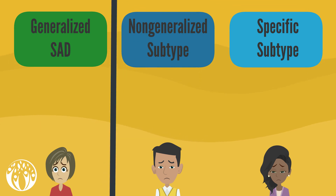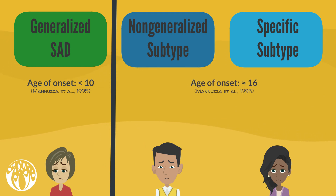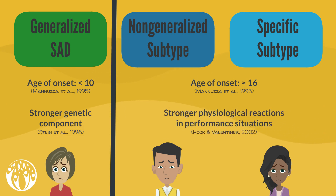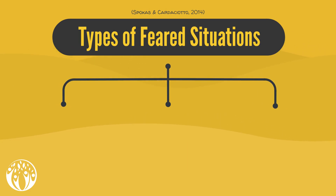Generalized SAD also seems to differ from the other two subtypes by an earlier age of onset — under 10 years of age — compared to an average of 16 years for the other two. Generalized SAD has been shown to have a stronger genetic component related to it, and interestingly, the other two subtypes show stronger physiological reactions in performance situations such as public speaking.